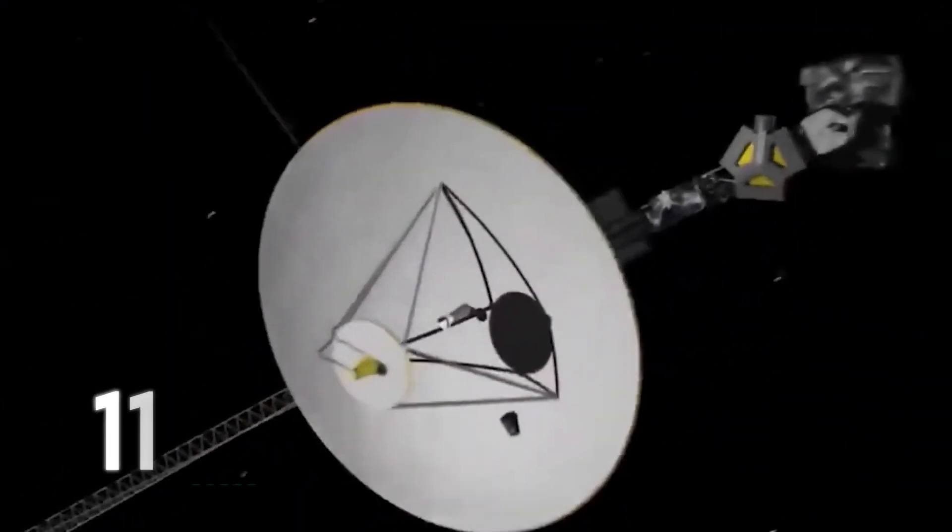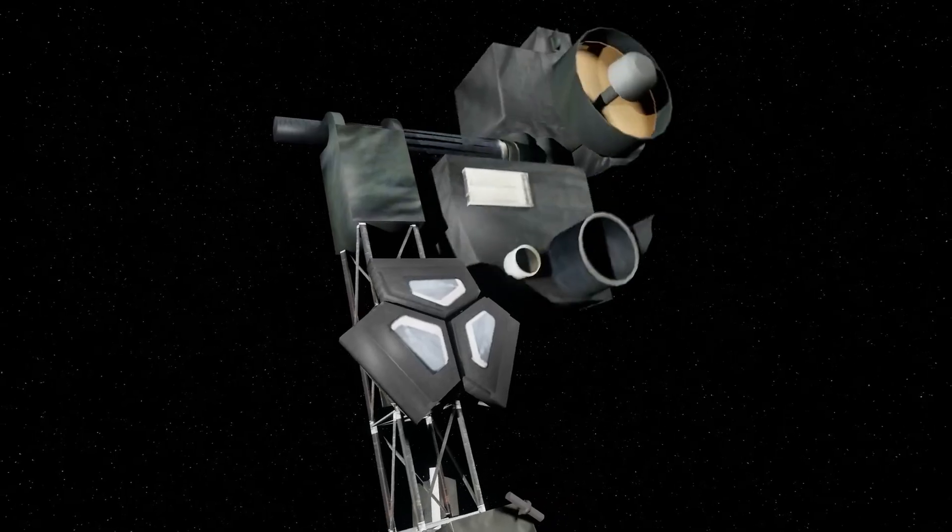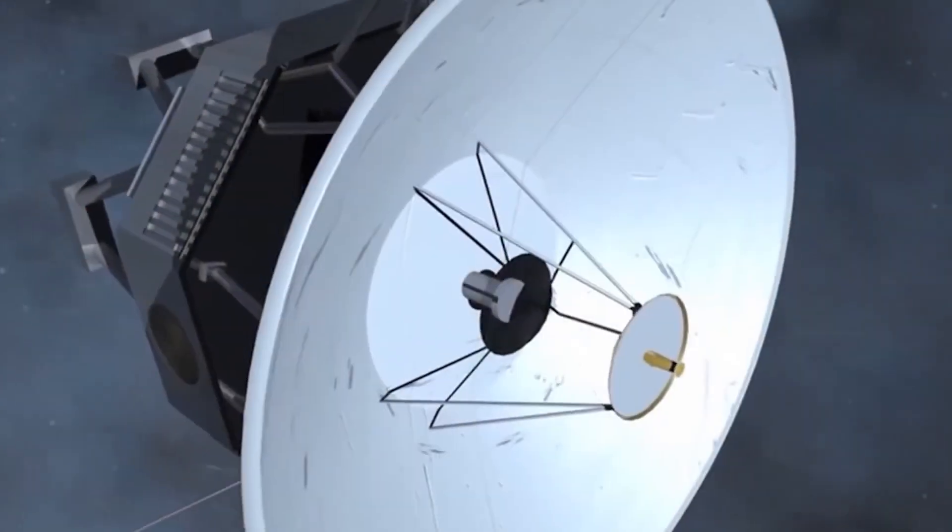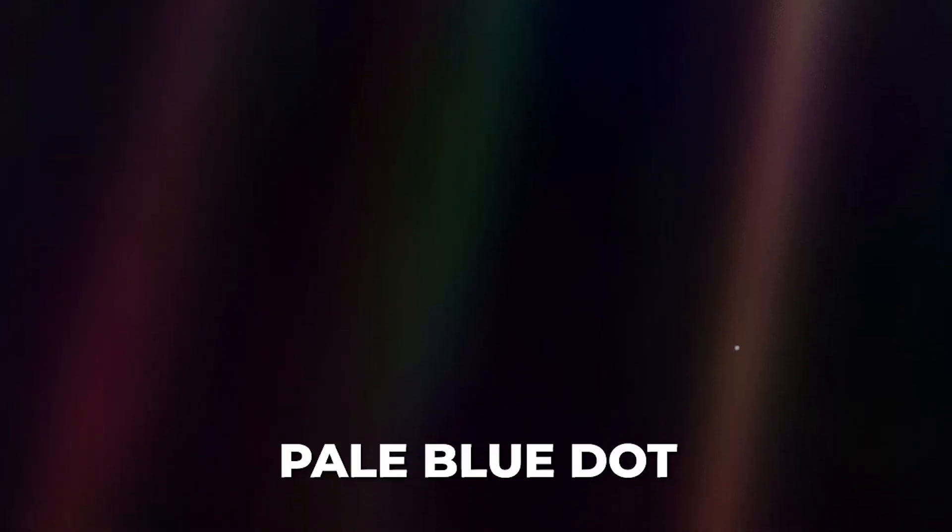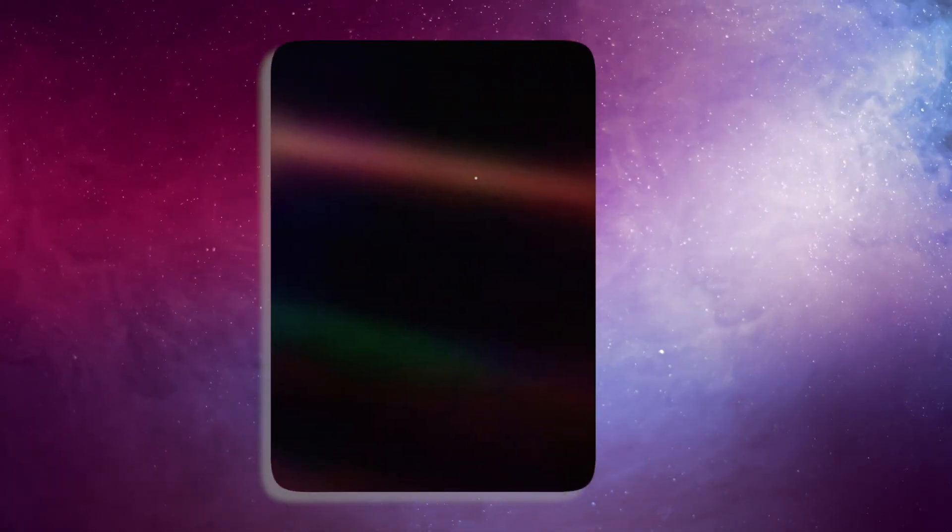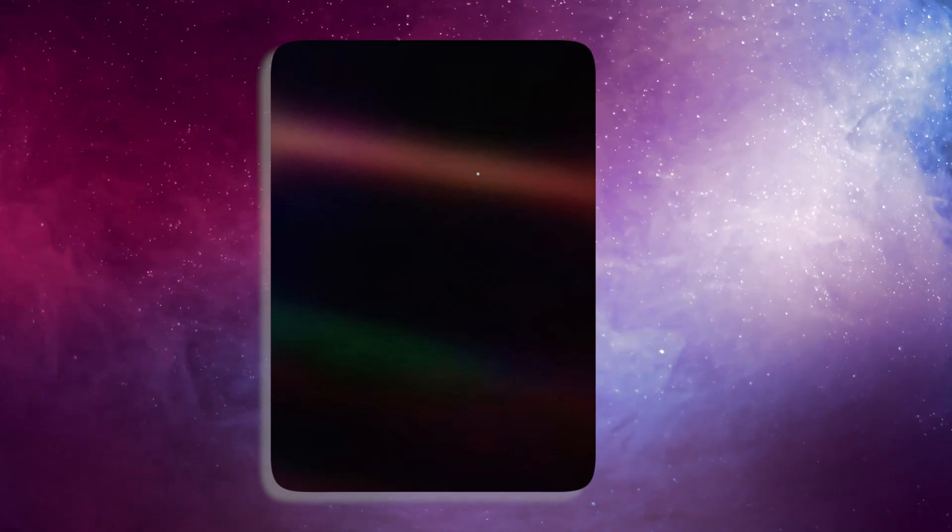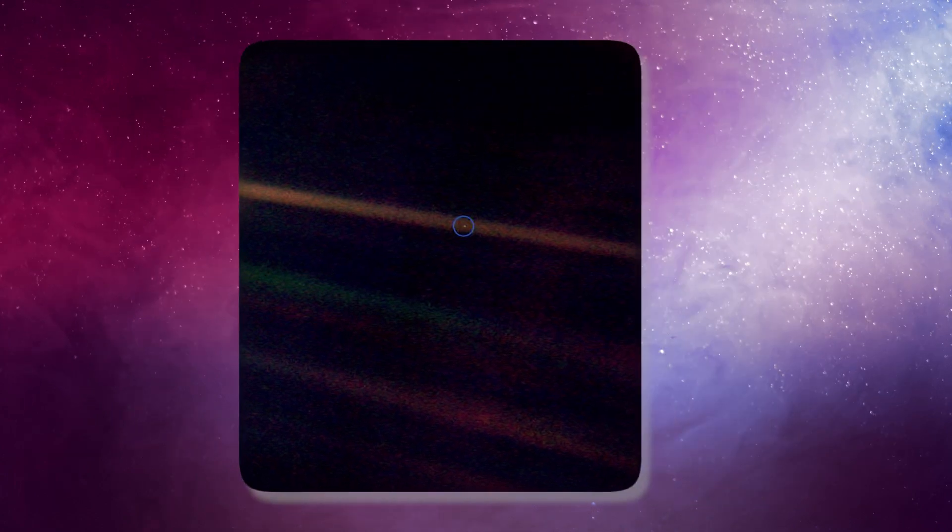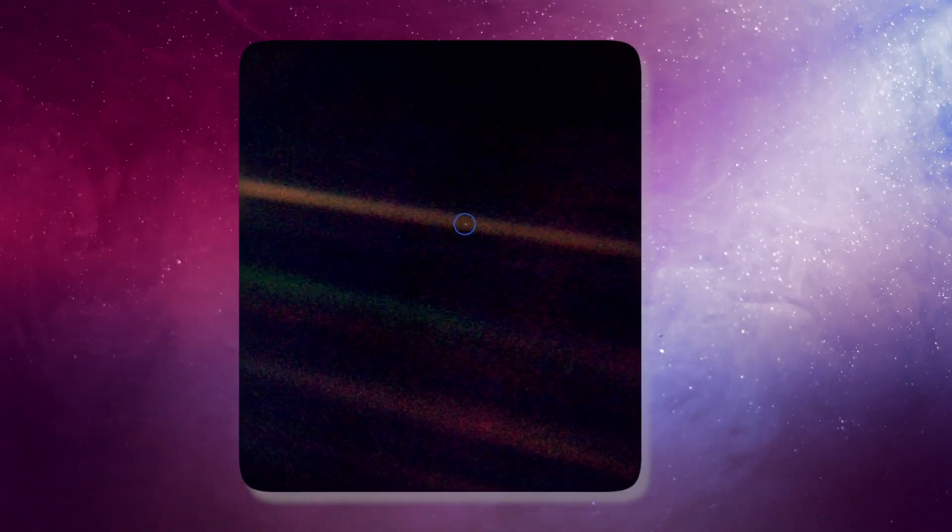Sagan's unwavering persistence paid off. On Valentine's Day in 1990, Voyager 1 turned its camera back toward the inner solar system and captured a series of 60 images. The most iconic among them, known as the pale blue dot, remains an unforgettable symbol of our place in the cosmos, taken from a distance of 3.8 billion miles, making it the farthest image of our planet ever recorded.